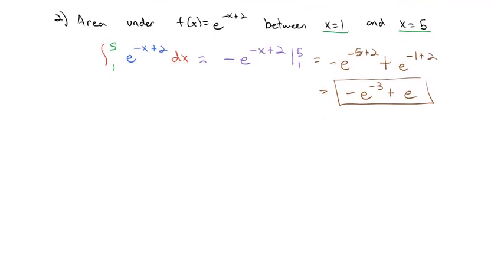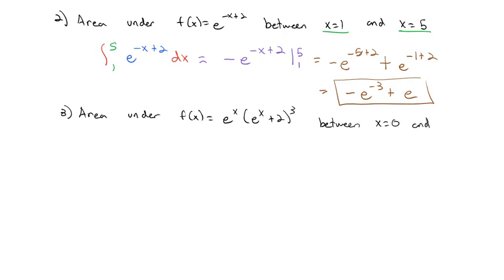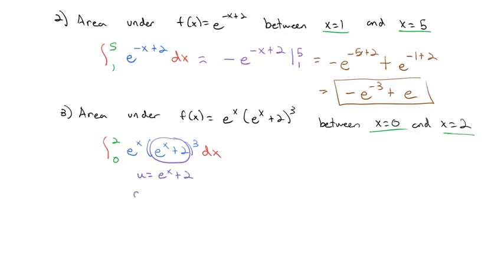Let's try one more example. We want the area under f of x equals e to the x times the quantity e to the x plus 2, cubed, between x equals 0 and x equals 2. We integrate from 0 to 2 of e to the x times e to the x plus 2 cubed dx. We can't find the integral directly, but we can use substitution if we make u equal to e to the x plus 2, so it becomes u cubed, and its derivative e to the x dx is multiplied in there.